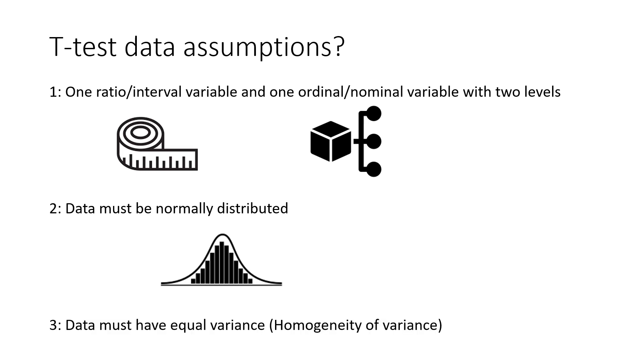Rule 3. The variances should be equal. This is called homogeneity of variance. If they are not equal, we need to do a slightly different version of the T-test.